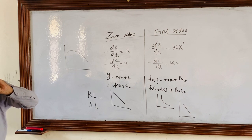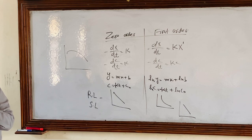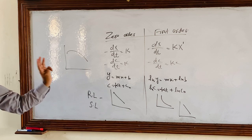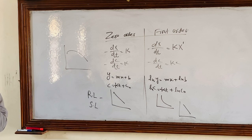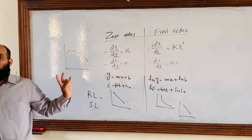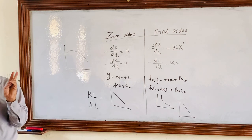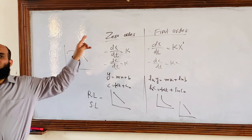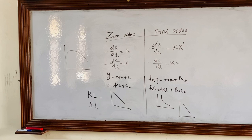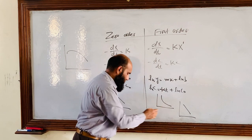On a semi-log graph, first order data gives a straight line, while zero order data gives a curve. To summarize: the equation difference is dx/dt equals k versus dx/dt equals kx. The straight line equation is y equals mx plus b for zero order and ln y equals mx plus b for first order. Zero order is concentration independent; first order is concentration dependent. Zero order is time dependent; first order is time independent.